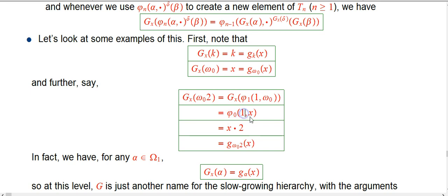Oh, well, what's phi nought with strength one of x? That's just x times two. Hey, that's exactly what we would have gotten for little g with strength omega nought doubled of x.